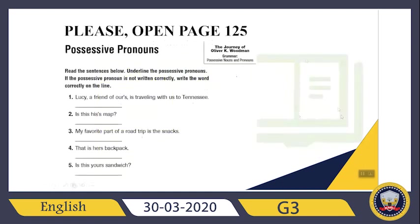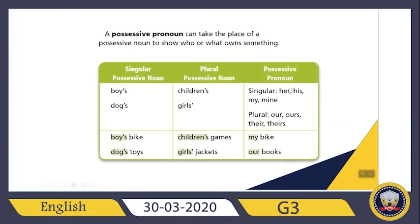Right now please open page 125 and let's read the question together. It says: read the sentences below, underline the possessive pronouns. If the possessive pronoun is not written correctly, write the word correctly on the line. So some of them can be correct but others cannot be correct. Let's check the first sentence: Lucy, a friend of our's, is traveling with us to Tennessee. Which one is our possessive pronoun? Remember our possessive pronouns: her, his, my, our, their.